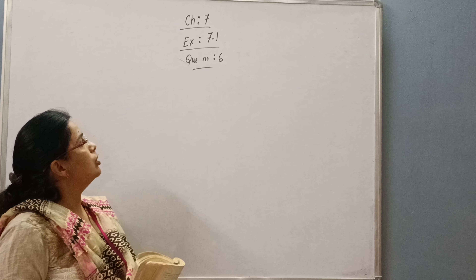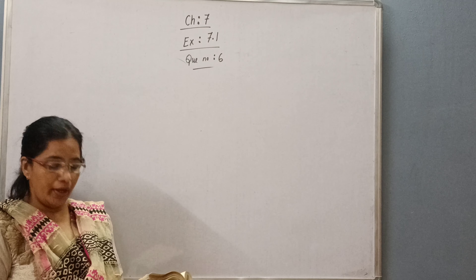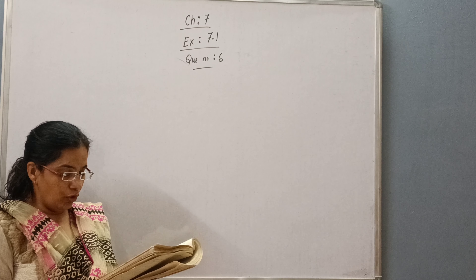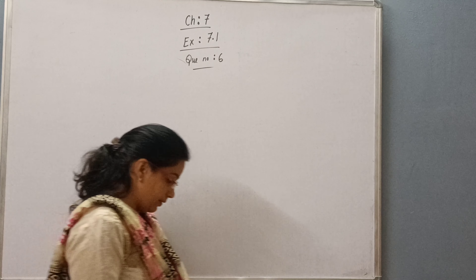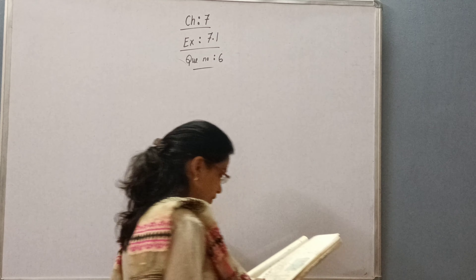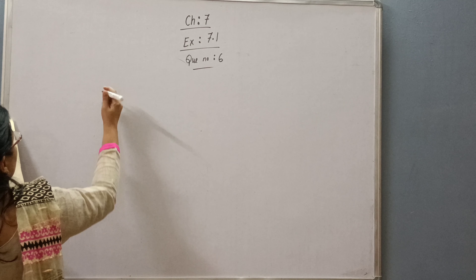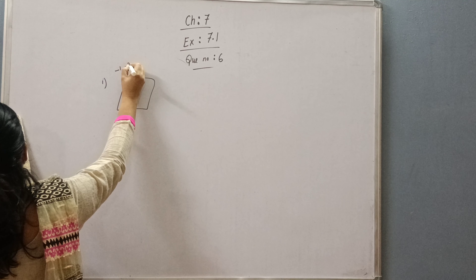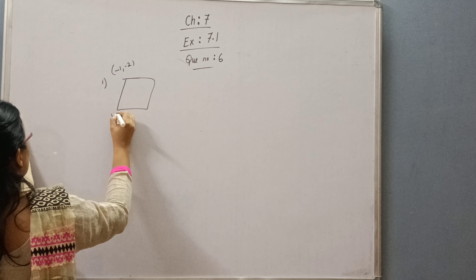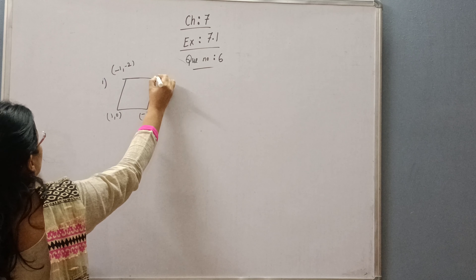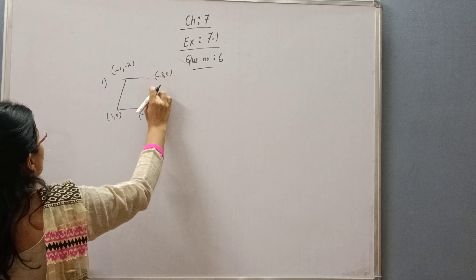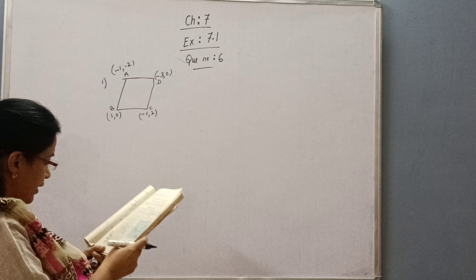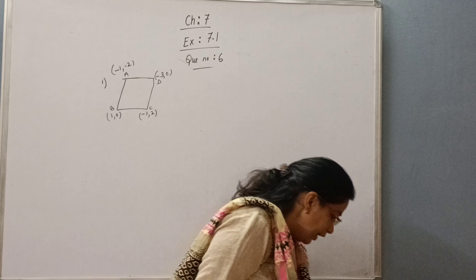Greetings everyone. Today we will do question number 6 of exercise 7.1. The question is: name the type of quadrilateral formed, if any, by the following points and give reasons for your answer. The points for part 1 are: A(-1, -2), B(1, 0), C(-1, 2), and D(-3, 0). We have to identify the type of quadrilateral.